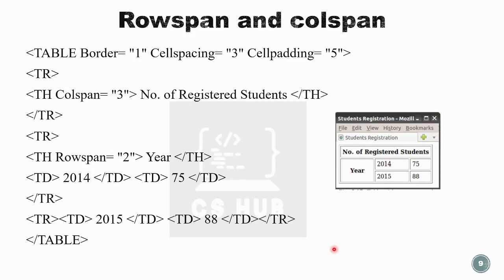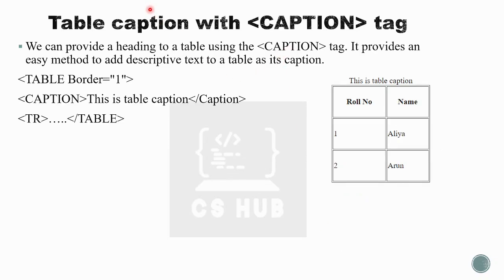Next, we can add a table caption. We can provide a heading to a table using the caption tag, which gives a description to the table. This tag is used within the table tag since it is the heading of the table. The caption tag provides an easy method to add descriptive text to a table as its caption.